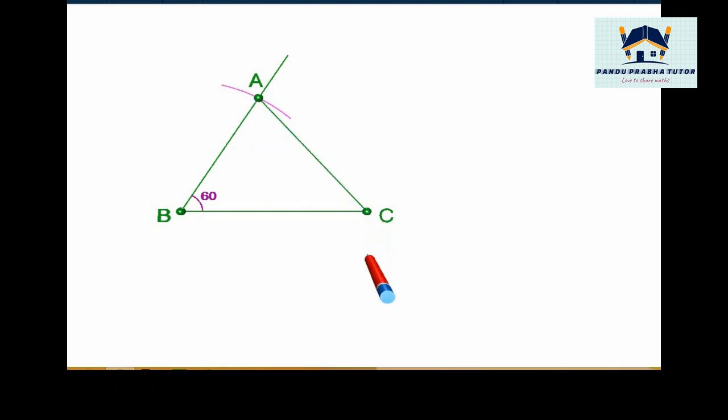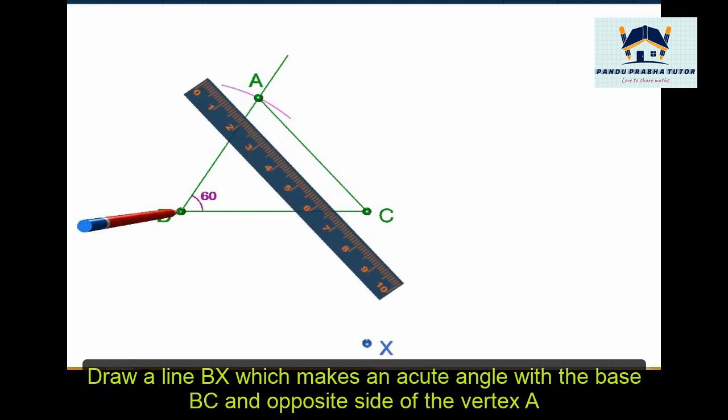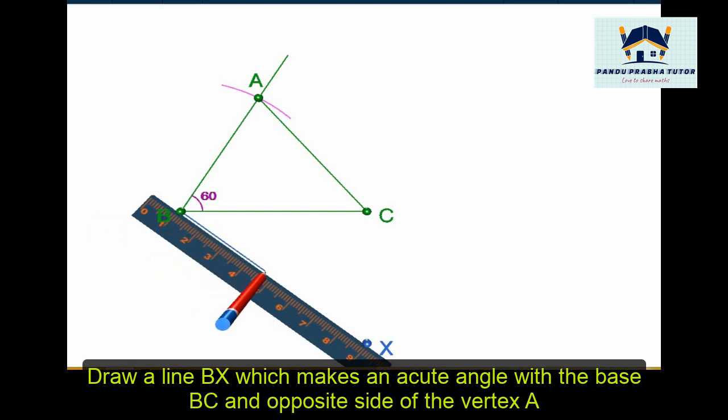Now we are going to construct similar triangles. For this, draw a line BX which makes an acute angle with the base BC, which is opposite to the vertex A. Remember this point.